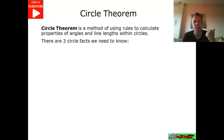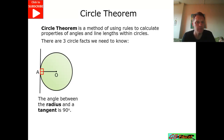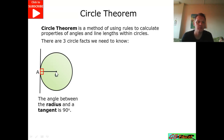There are three facts about circles that we need to know. The first one is that if we've got an angle between the radius and the tangent, it's always going to be 90 degrees — it's always going to be perpendicular from the tangent.